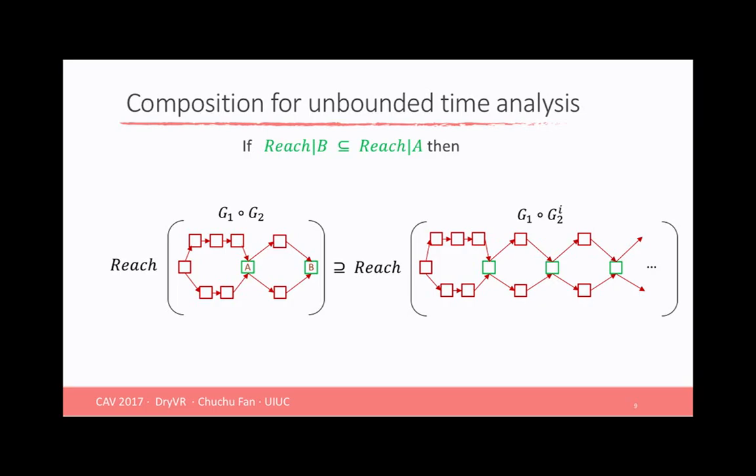So in this case, if your system transition graph has some regular pattern, we can only analyze the one that is pretty simple, G1 composed with only one G2.